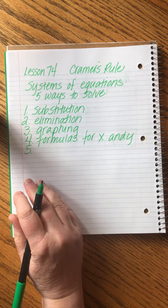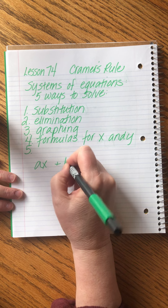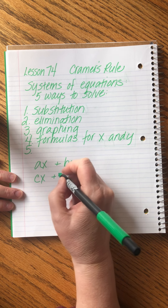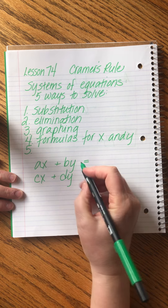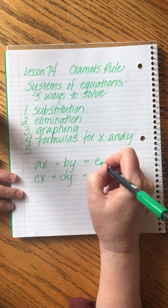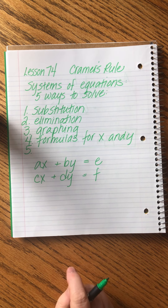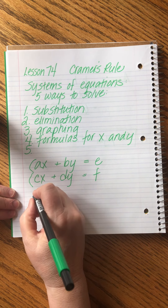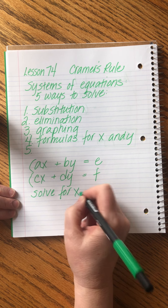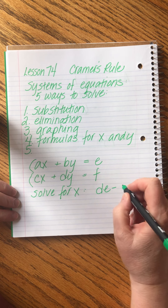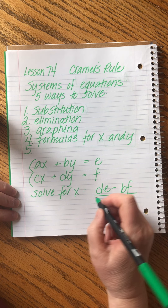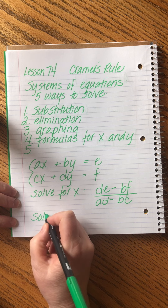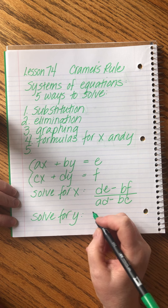Let me put in the fifth method and then we can review. Remember, if you take AX + BY = E and CX + DY = F, with A, B, C, D as coefficients, you can solve this system for X and get a formula: X = (DE − BF) / (AD − BC). And we can also solve for Y and get a corresponding formula.